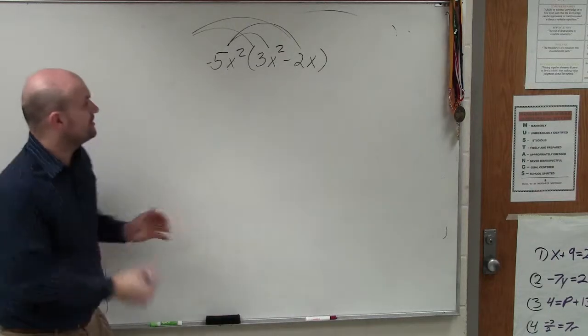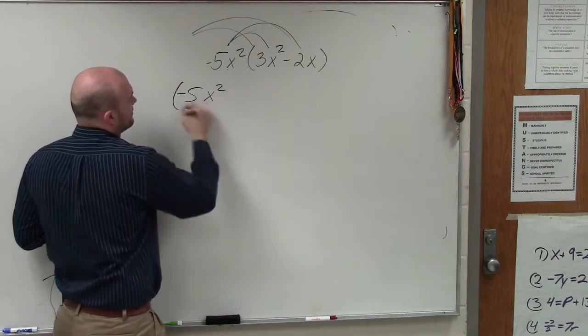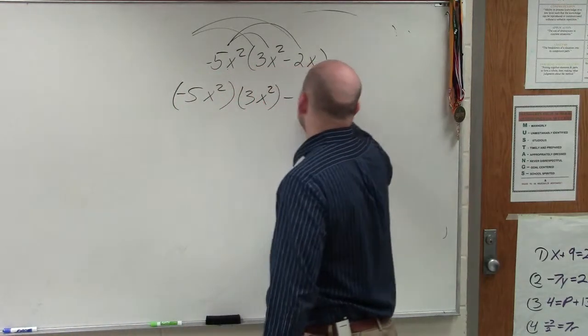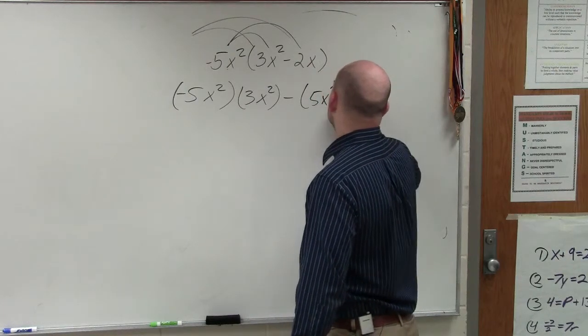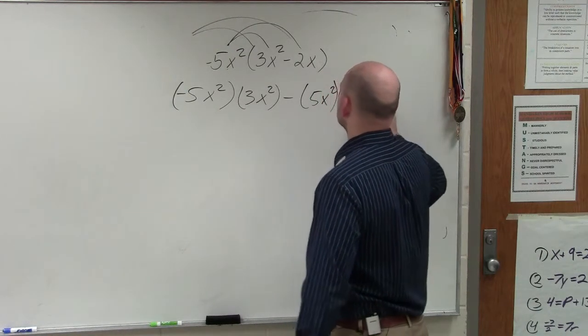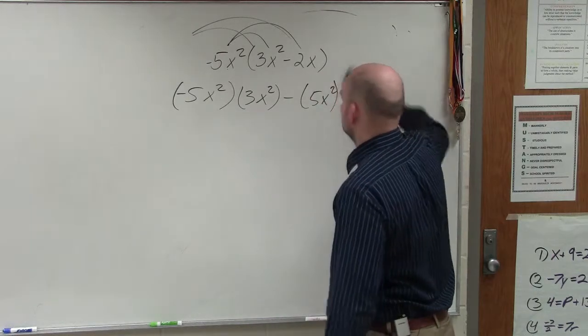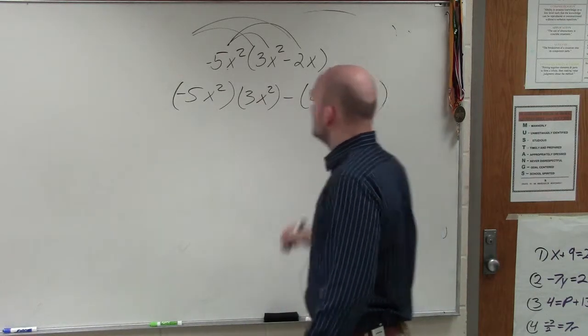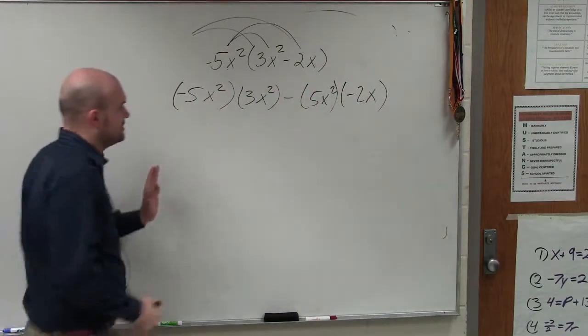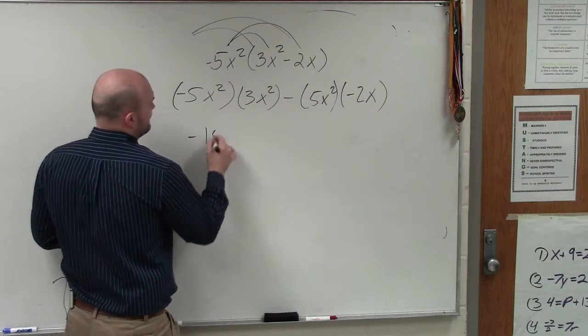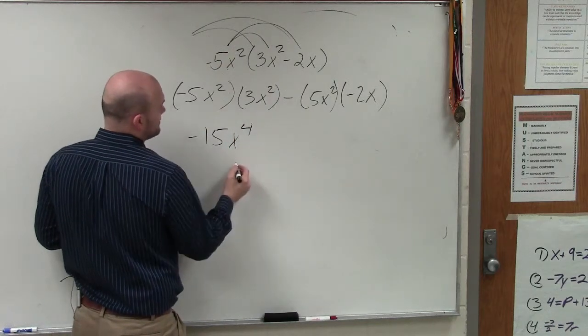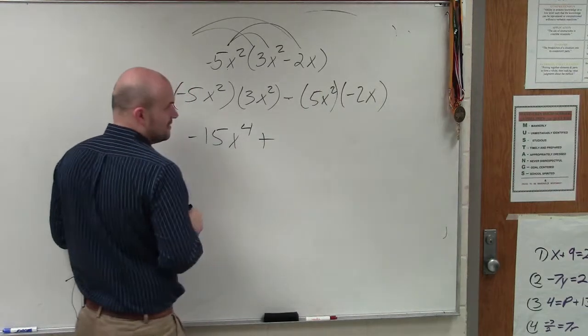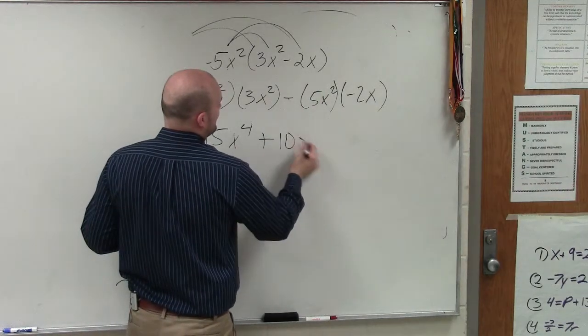So all I simply need to do is say, that's -5x² times 3x². And that is... ah, I already did that. -5x² times -2x. So you're multiplying the -5x² times both of the terms. So here I get -15x⁴, and then here, negative times negative becomes positive, and I get 10x³.